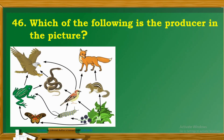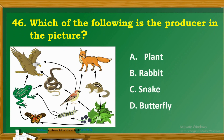Question 46: Which of the following is the producer in the picture? A. Plant. B. Rabbit. C. Snake. D. Butterfly.